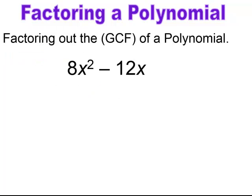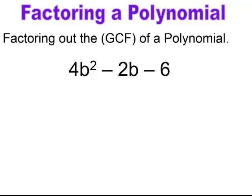Pause and try. In this case the GCF is 4x. When factored out, you're left with 2x − 3. Pause and try. In this case the GCF is 2. When factored out, you're left with 2b² − b − 3. Remember, don't write a coefficient of 1 in front of b; we don't show the coefficient of 1.